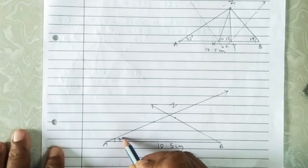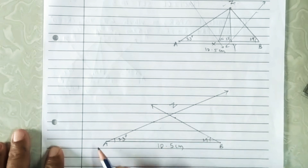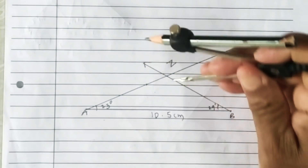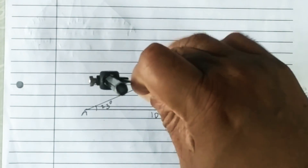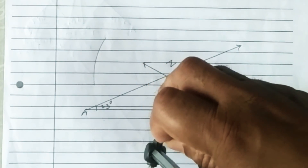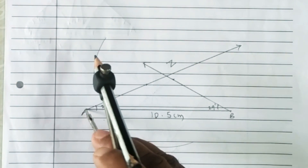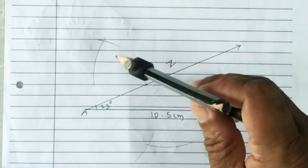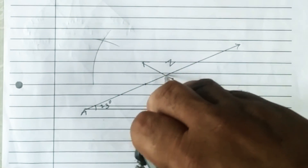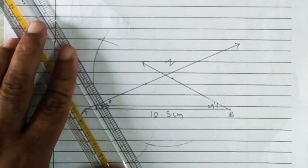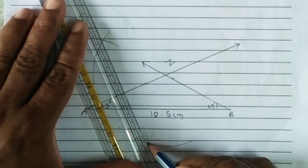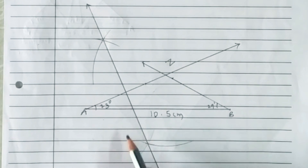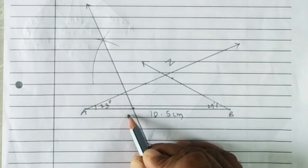The next step is to draw the perpendicular bisector of segments ZA and ZB. With the help of a compass, keep the pointer at Z, take more than half the distance of ZA, and draw arcs one above and one below segment ZA. Keep the pointer at A and cut the arcs. See that both arcs intersect each other. Draw the perpendicular bisector of ZA by joining these two points. Where it intersects segment AB is our point X.